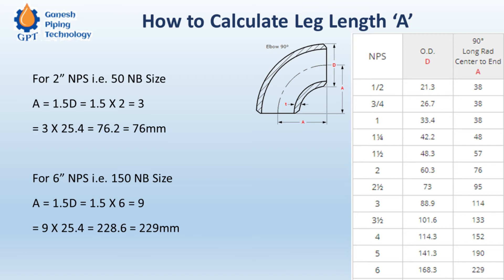Please remember: when using the formula A = 1.5 × D, 'D' must always be in inches (NPS). The nominal bore (NB) metric equivalent — for example, 50 NB equals 2 inch, 80 NB equals 3 inch — should be converted to inches before applying the formula. For the short radius elbow, the formula is A = 1.0 × D. Short radius elbows are not frequently used in piping, except for the outer elbow of jacket piping. This fitting length 'A' is the value to be subtracted when estimating pipe length.